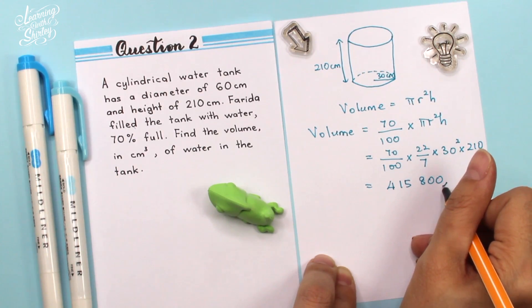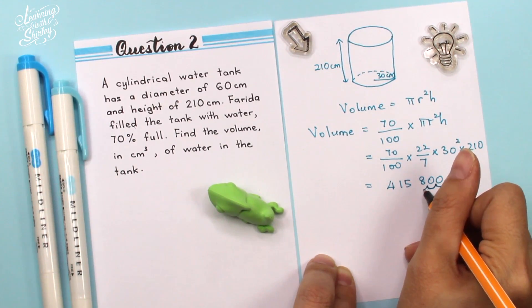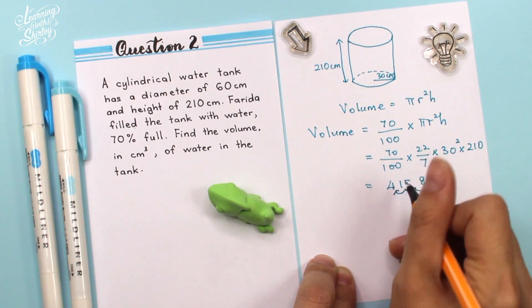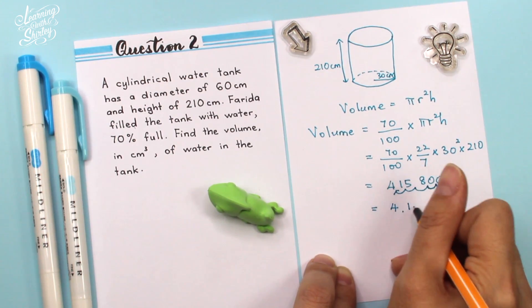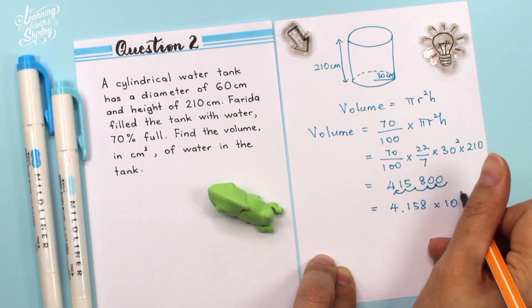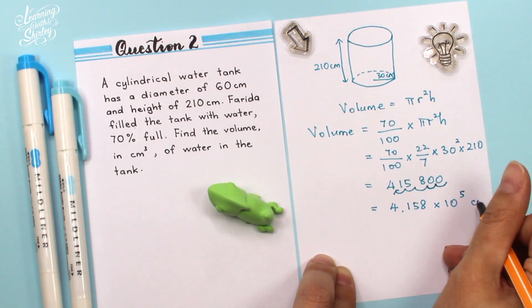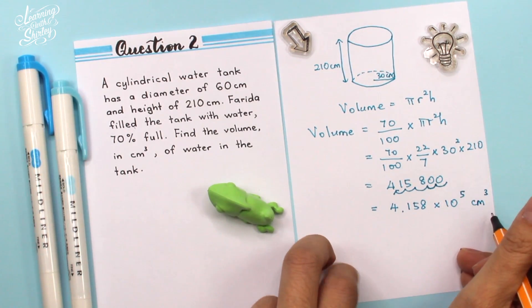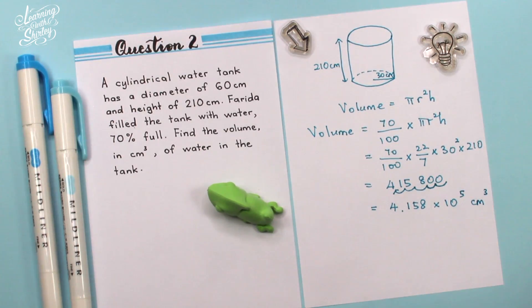So we have to change this to become standard form. So you have to move the decimal point 1, 2, 3, 4, 5 until here. So it becomes 4.158 times 10 to the power of 5 and the unit is cm cube or cubic centimeter. So this is the final answer.